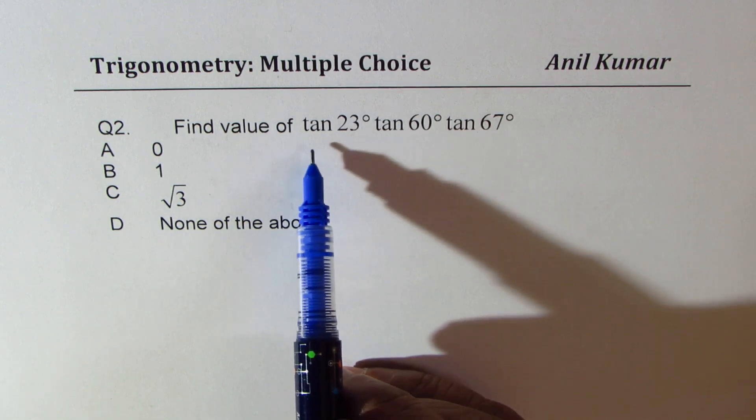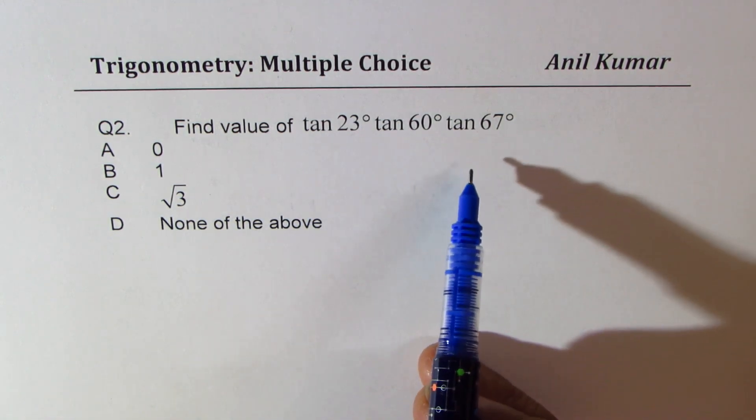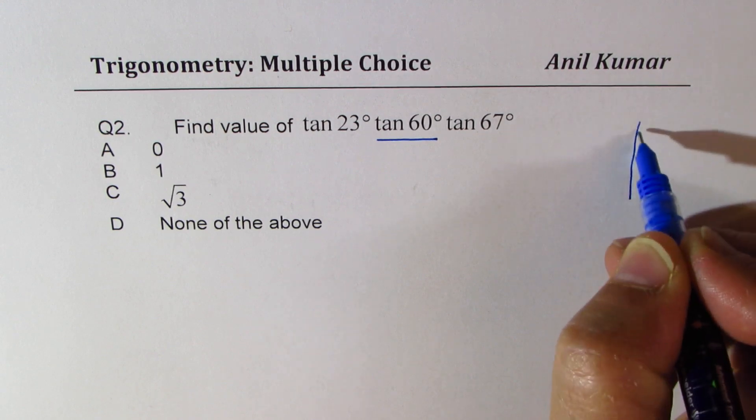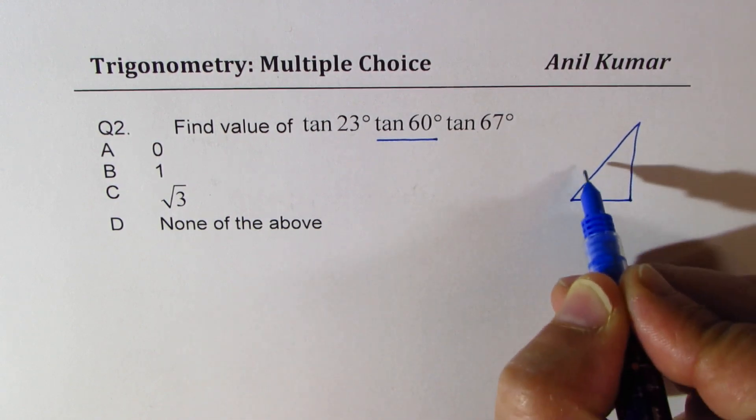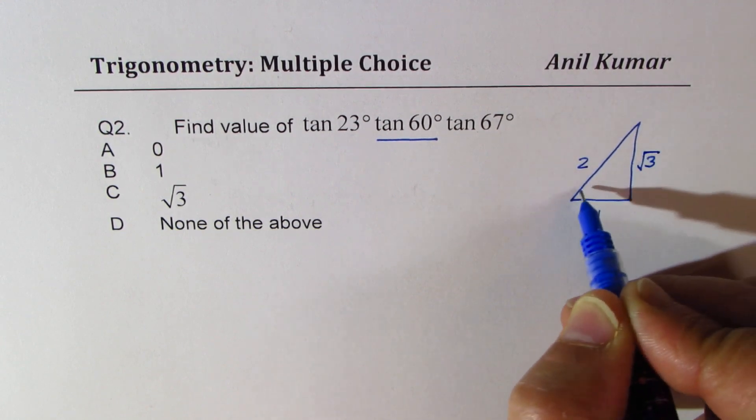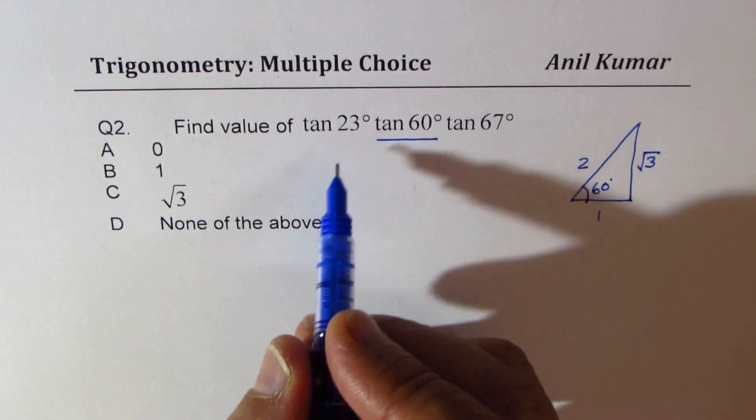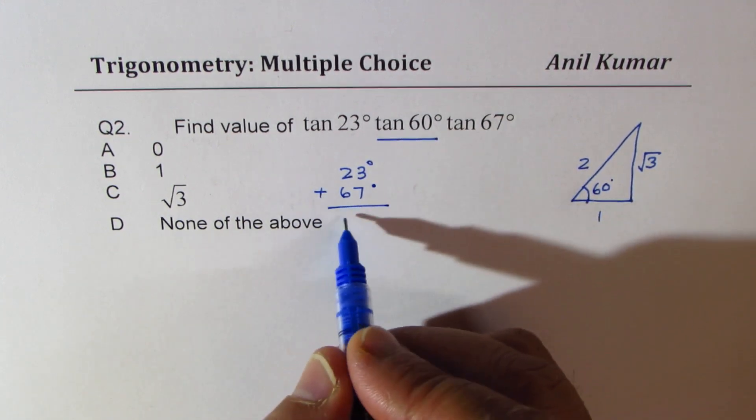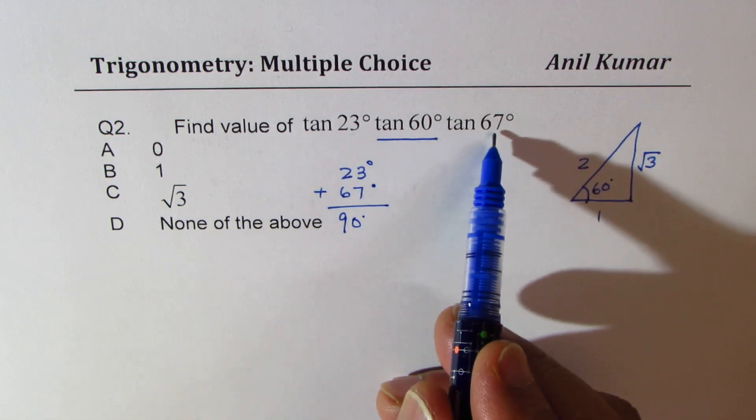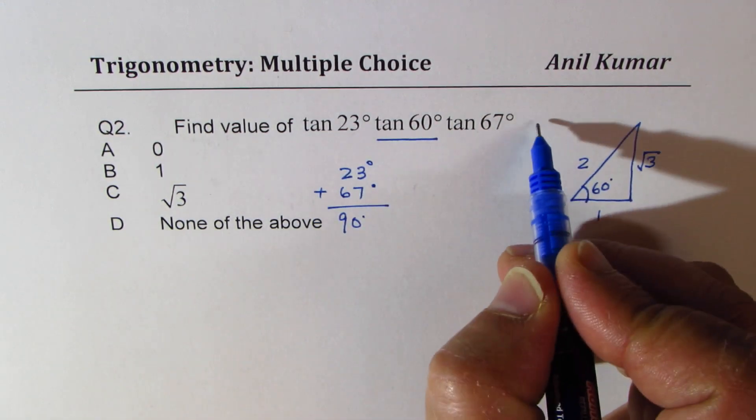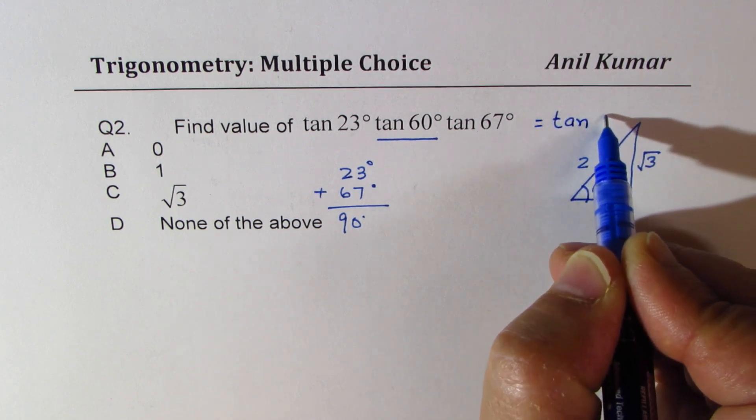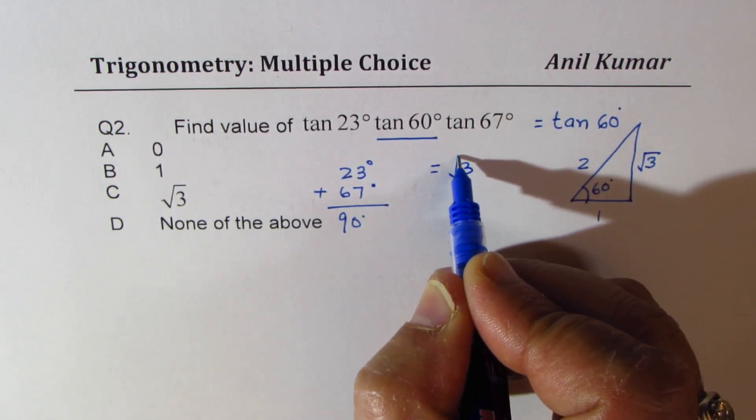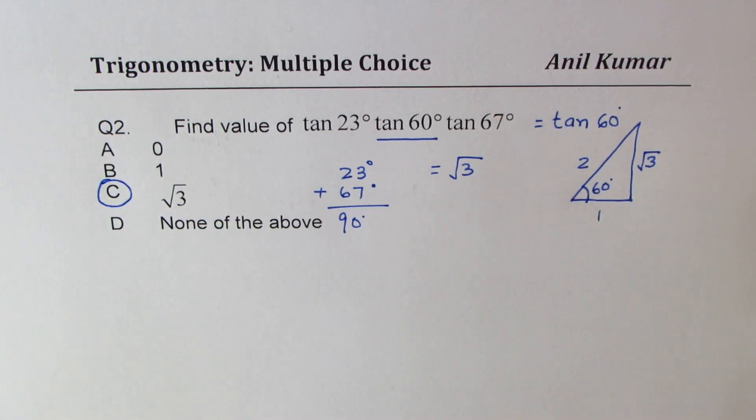So let's look into a similar question once again. This time we have tan 23 times tan 60 times tan 67. Well, calculator is not allowed. So what we can do is, for tan 60, we can always look into our special triangle, which is 1, 2, square root 3 for an angle which is 60 degrees. Now here, you see that 23 degrees plus 67 degrees is indeed equal to 90 degrees. Since that is 90 degrees, we know that this whole thing should be equals to tan 60 degrees. And for tan 60, we get square root 3. Is that clear? So we get C as our answer.